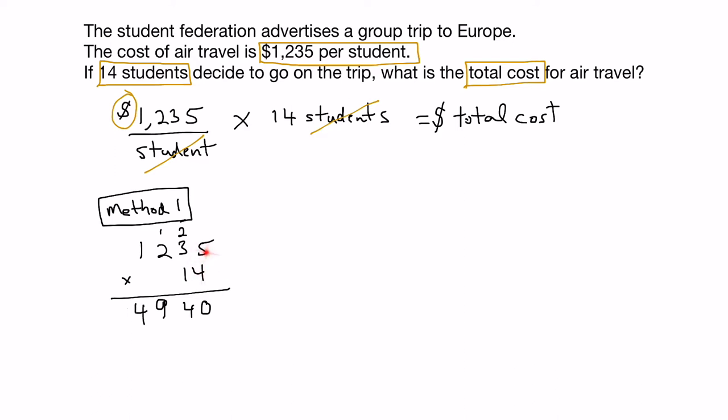So we've multiplied the ones digit by all the numbers in the top row. Now we're going to multiply the tens digit by all the numbers in the top row. And because it's a tens digit, we have to start in the tens column, so we place a 0 in the ones column and start in the tens column. So, we start with 1 times 5, which is 5. Then we multiply 1 times 3, which is 3. And then we multiply 1 times 2, which is 2. And finally, 1 times 1, which is 1.